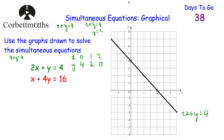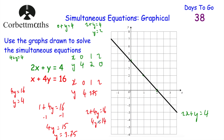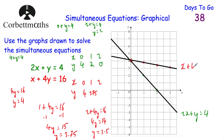Now let's draw x plus 4y equals 16 using an xy table. When x equals 0: 4y equals 16, so y equals 4. When x equals 1: 4y equals 15, so y equals 3.75. When x equals 2: 4y equals 14, so y equals 3.5. We also get points like (3, 3.25) and (4, 3), and so on. Let's draw a nice straight line through those points — that's the graph of x plus 4y equals 16.